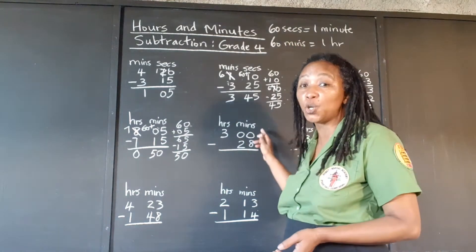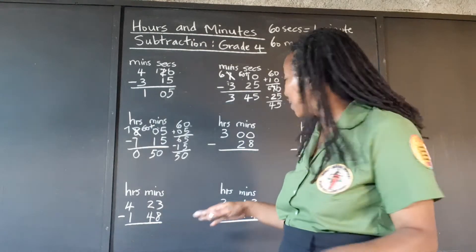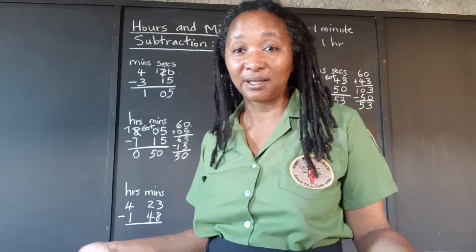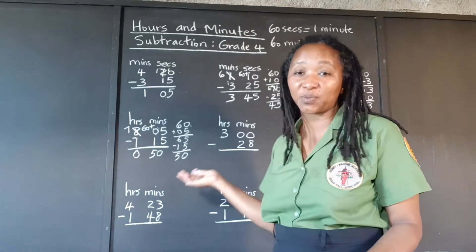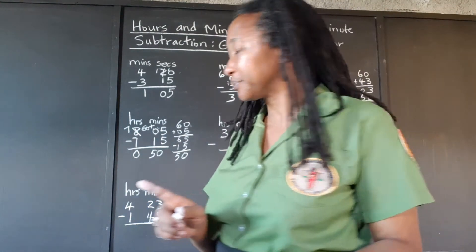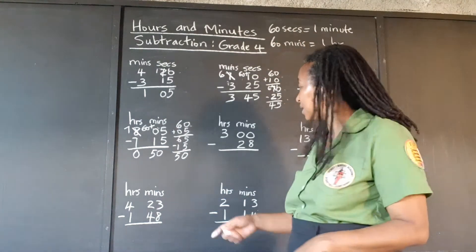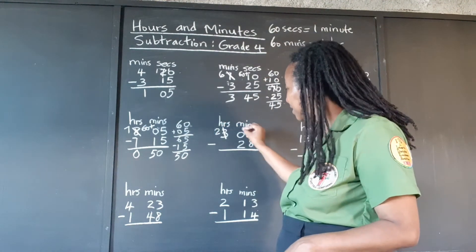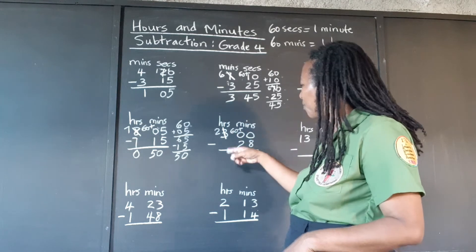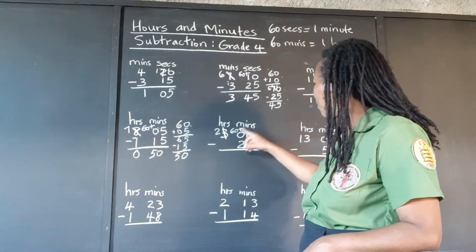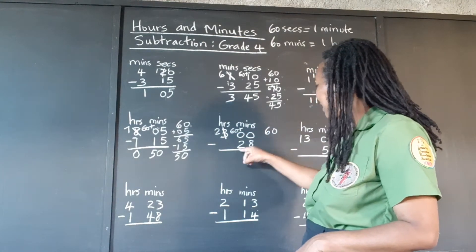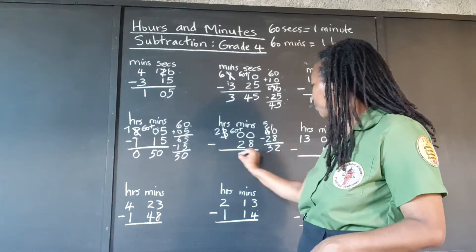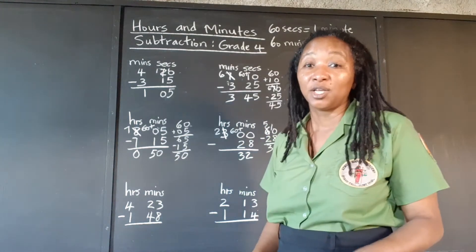Here we have 3 hours and no minutes at the top, and they want us to take 28 minutes. We have a trick we can use. We can go over to the hours and take 1 hour, carrying it to the minutes as 60. We know that 60 plus 0 is 60. We take away the 28 and we're left with 32 minutes. It's good to know tricks — if we didn't know that, we'd be scratching our heads wondering what to do.